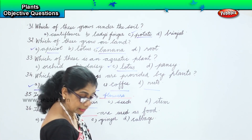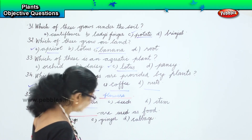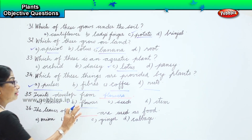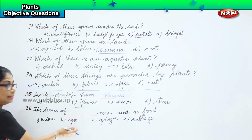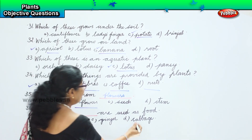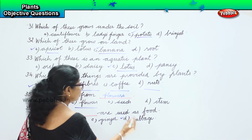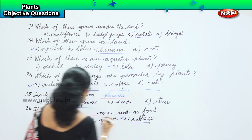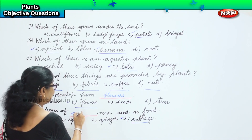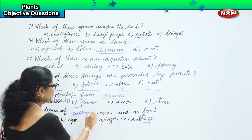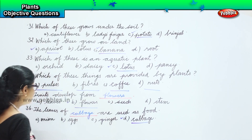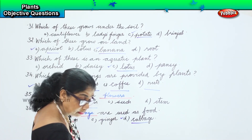Which of these — the leaves of which are used as food? Leaves of onion? No. Eggs? No. Ginger? No. Cabbage? Yes — the leaves of cabbage are used as food.